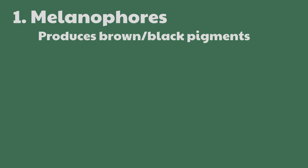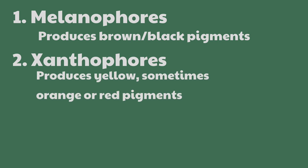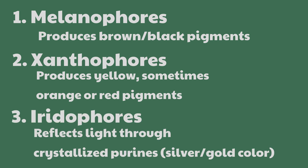In most reptiles and amphibians, they actually have three chromatophores. The first is melanophores, which produce the dark or brown pigment in their skin. The second is xanthophores, which usually show yellow pigments but can sometimes be orange or red. The last is iridophores, which actually reflect light and can come in a shiny gold or silver color. Most known morphs in axolotls are recessive, meaning each parent gave the recessive allele to the offspring.